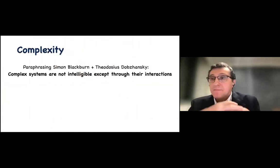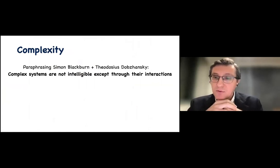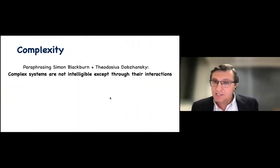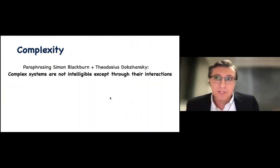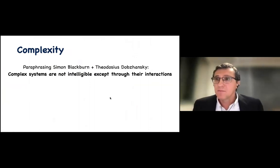Now, in this context, then, if I were to paraphrase and combine the famous statements of these two important individuals, I would say that complex systems are not intelligible except through their interactions. And it's this recognition that allows us to understand some very profound properties of complex systems, such as the fact that we cannot tell apart, even in principle, cause from consequence in many of these systems.